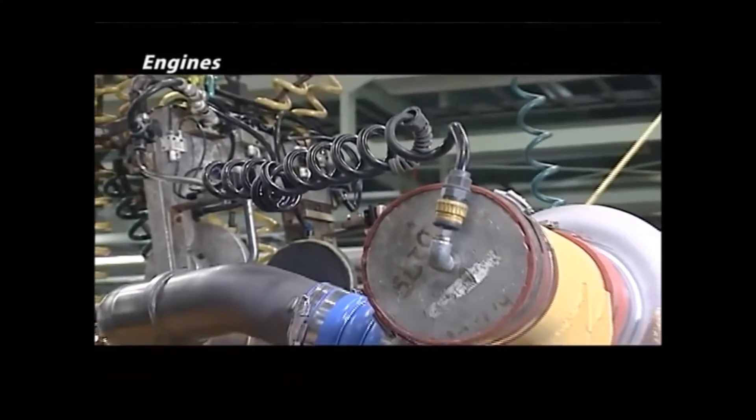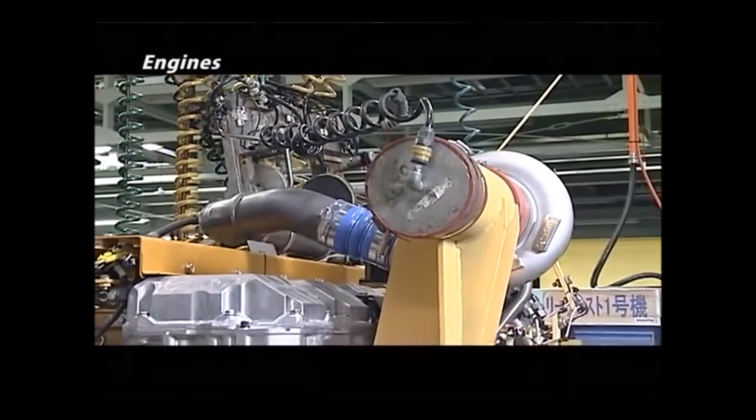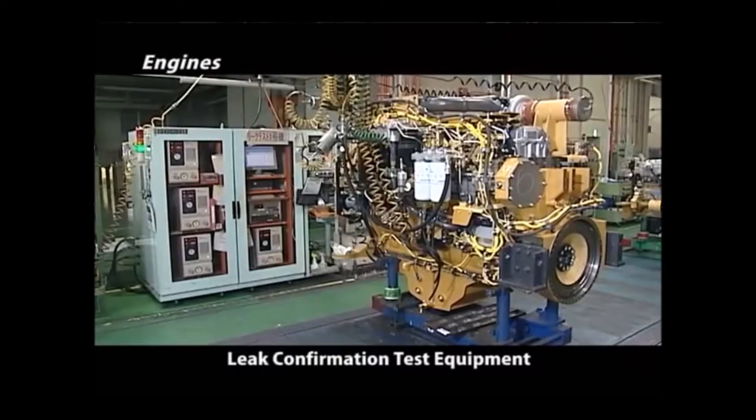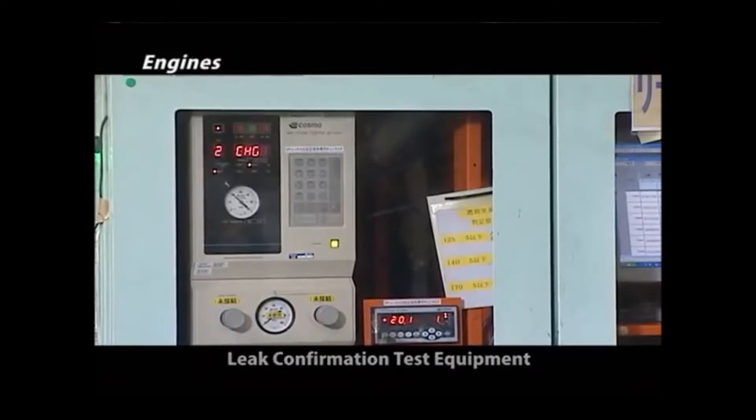The assembly line incorporates leak confirmation test equipment for checking assembly processes, including mistakes in tightening and assembling.